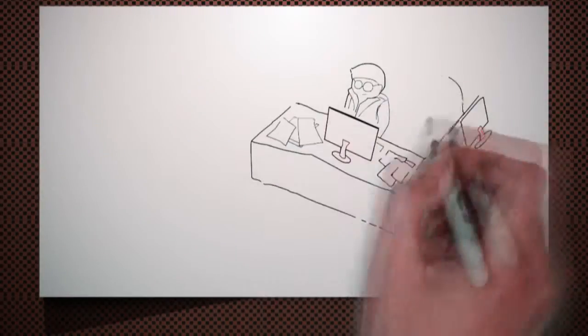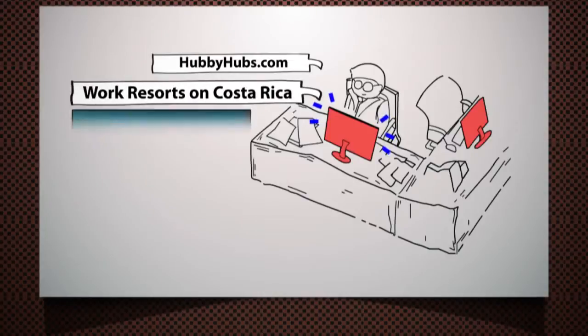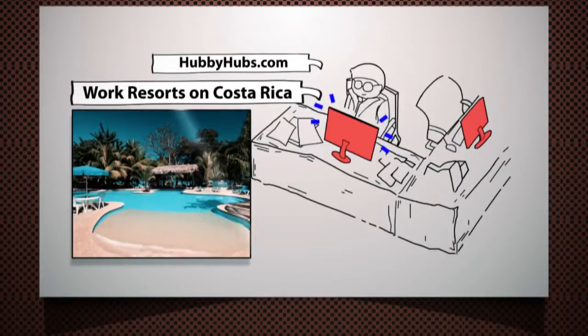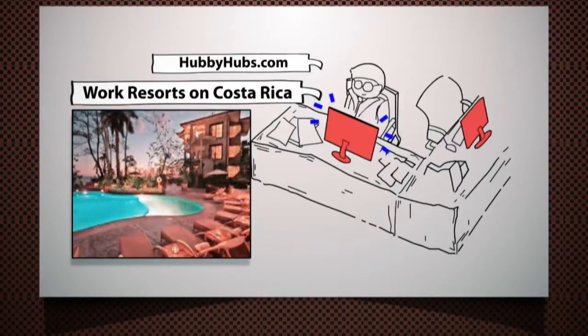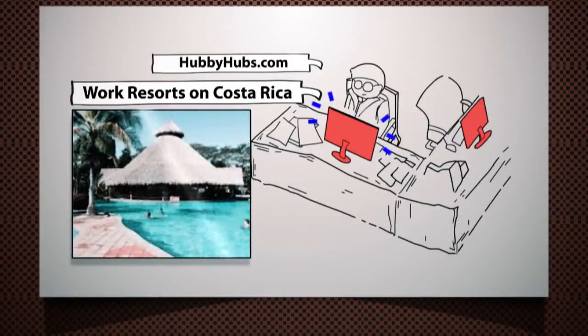Then Tom got online and stumbled upon Happy Hubs. Tom searched for work resorts in Costa Rica. He found an all-inclusive resort at the beach. He was able to read up on the other entrepreneurs already living there. He applied and two weeks later he was there too.